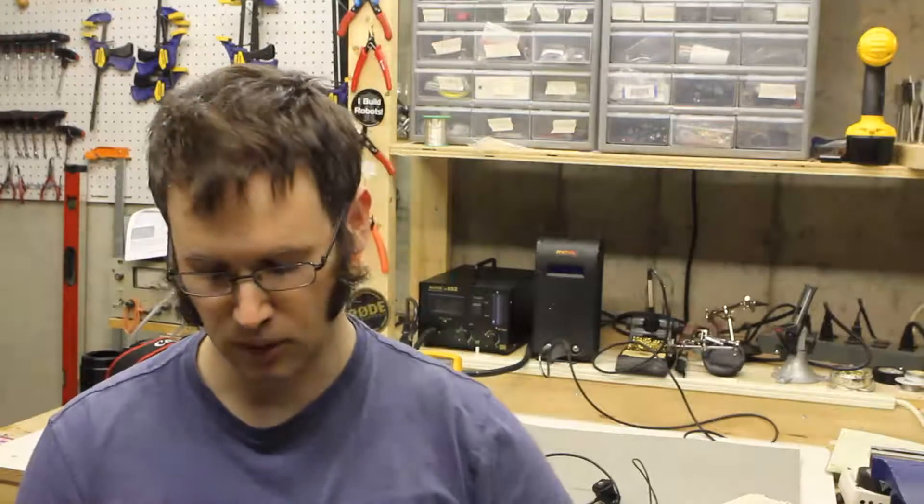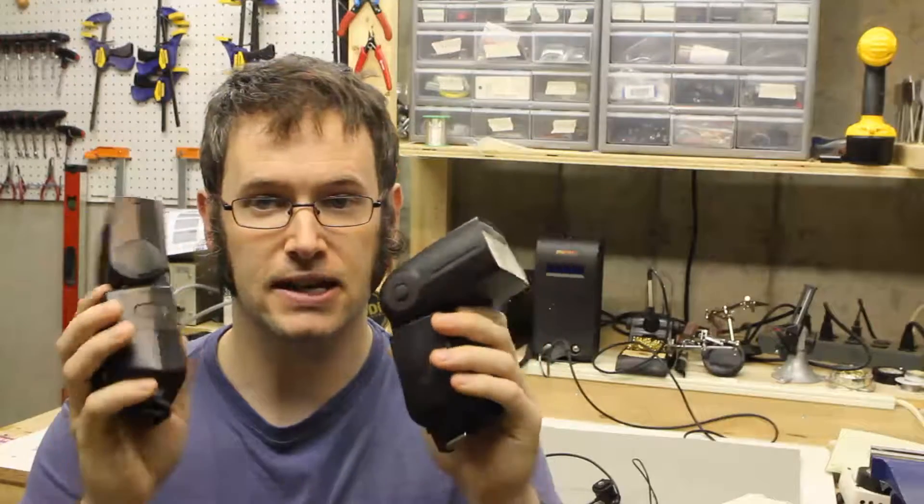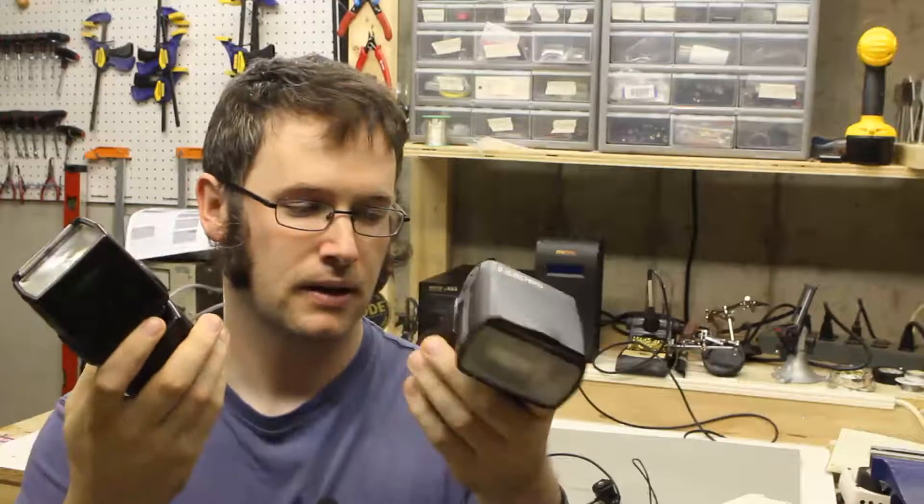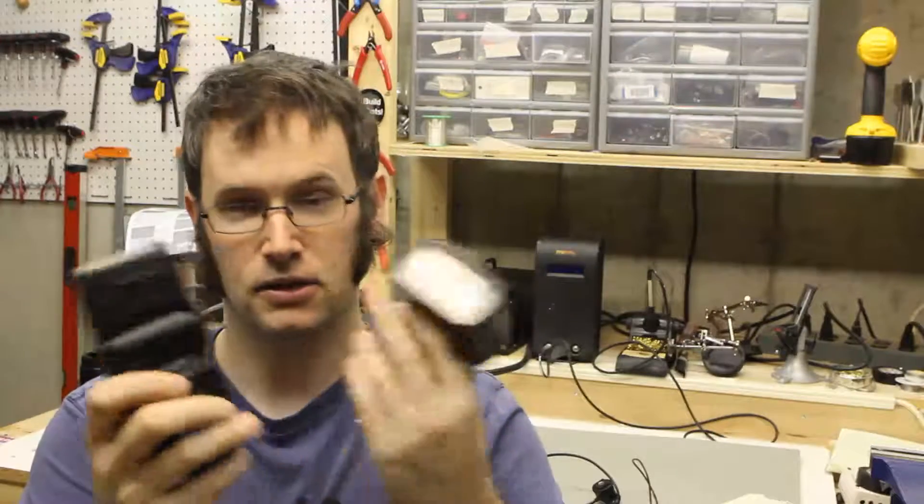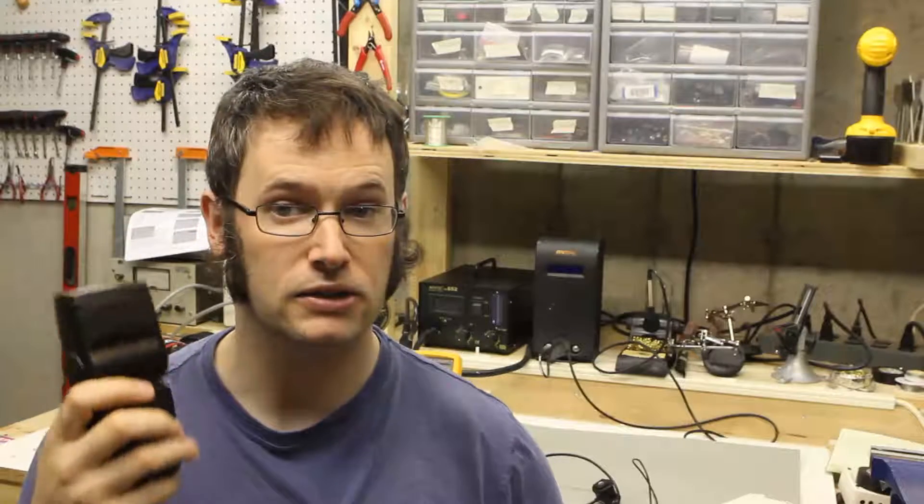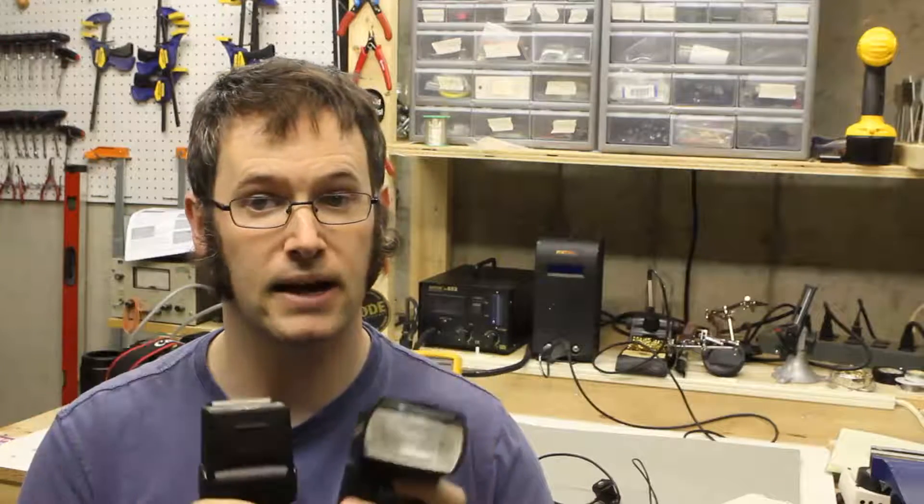Here are a couple more modern flashes that use much lower trigger voltages. This is a Canon. This is an off-brand one from China. I've used both of these with the camera axe as well, and these are safe on the camera axe.